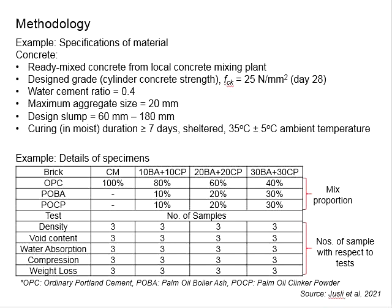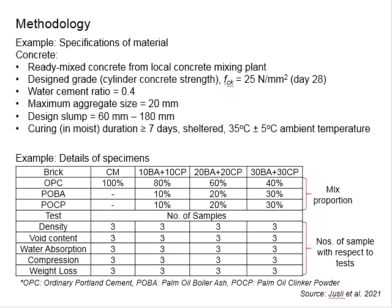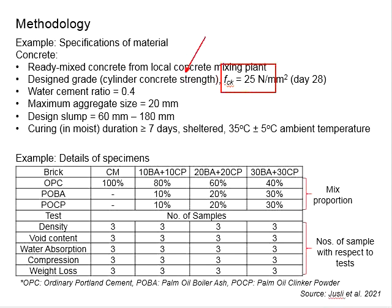You need to provide the details: the grade and specifications of the concrete. In this case, for the fabrication of the test specimen, the ready-mix concrete from the local concrete mixing plant was used. The design grade for the concrete is FCK equals 25 newton per mm² at 28 days. This concrete strength represents the strength of the cylinder concrete. When you order concrete from the local concrete mixing plant and specify the grade, you need to check whether the grade is defined by the Eurocode or by BS.